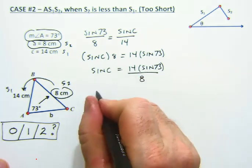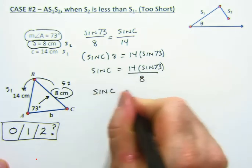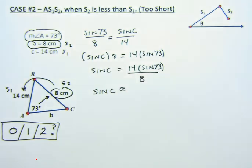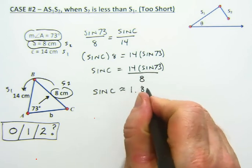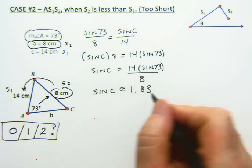And this will give us an approximate decimal. Let me calculate that. The decimal is 1.83, or something close to that.